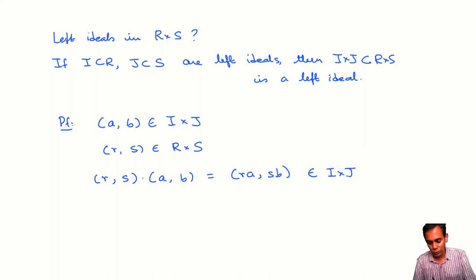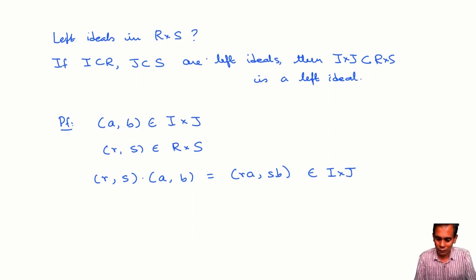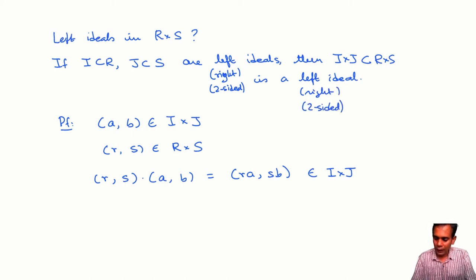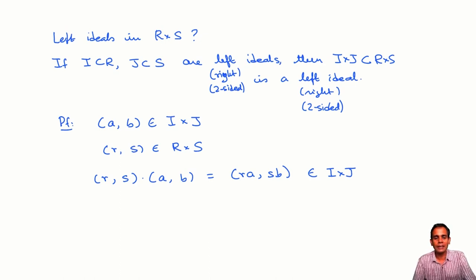So I×J is closed under left multiplication by elements in R×S, and of course I×J is also an additive subgroup of R×S, so I×J is a left ideal. You can replace 'left' here by 'right' or by 'two-sided' and it works exactly the same way. So if I and J are right ideals in R and S respectively, then I×J is a right ideal in R×S.